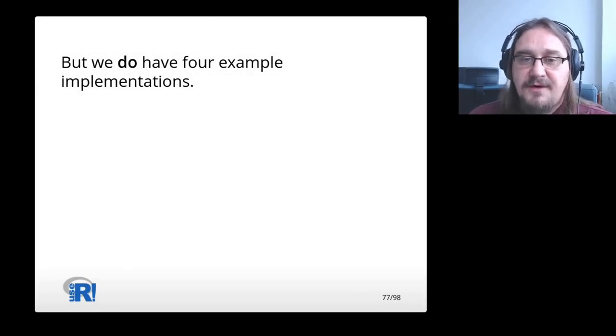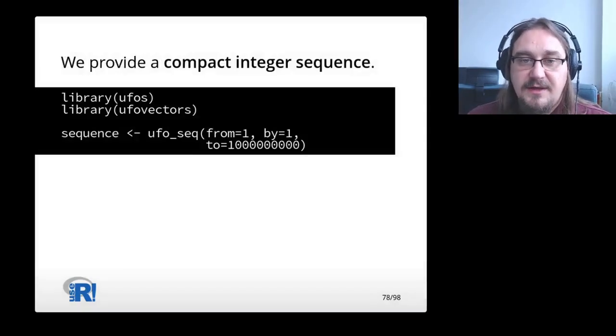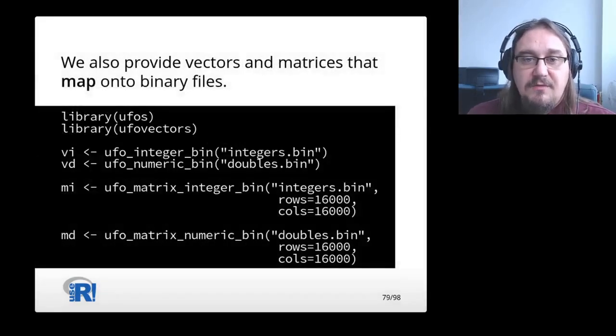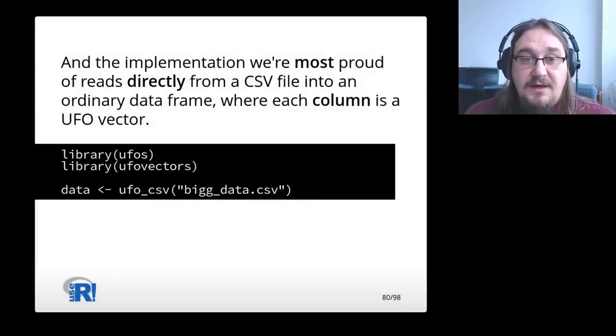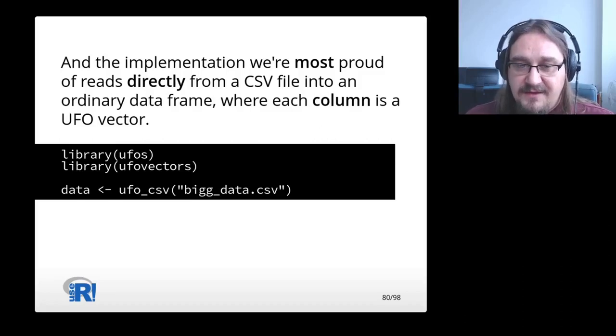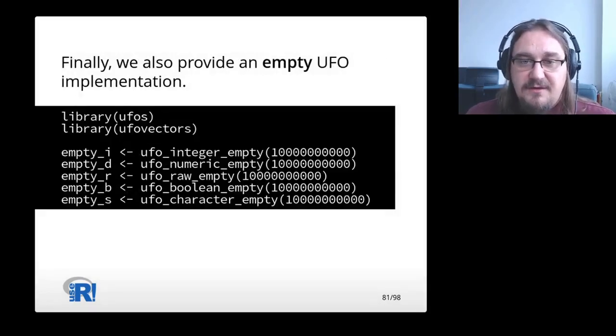But we do have four example implementations. We provide a compact integer sequence that looks like int-seq. We also provide vectors and matrices that map onto binary files. And the implementation we're most proud of reads directly from a CSV file into an ordinary data frame, where each column is a UFO vector. Finally, we also provide an empty UFO implementation.